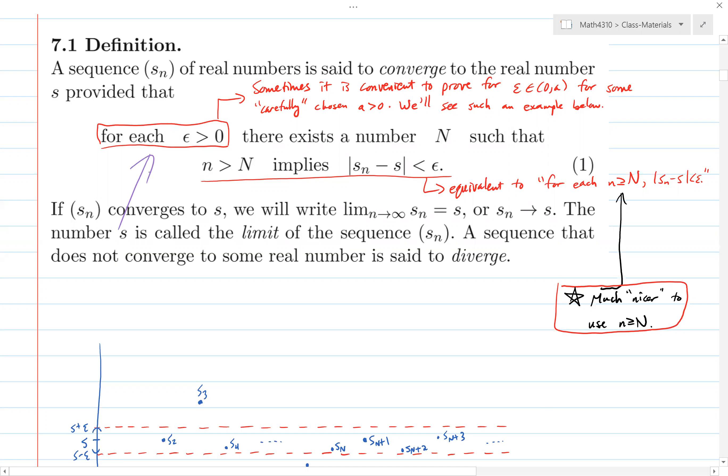This is the shorthand definition on this screen. I have all the parts underlined that go into a proof. So you want to write a sequence s sub n that's a subset of the real numbers converges if there exists a real number s. And that may or may not be specified when you go to write the proof.